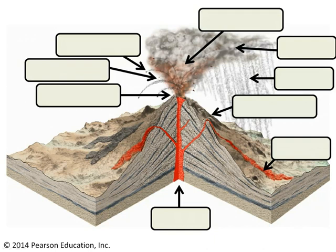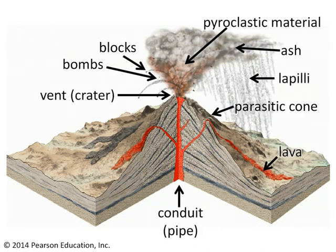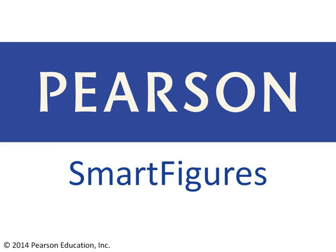Welcome back — let's see how you did. We've got a central conduit bringing magma towards the surface. Once that magma gets to the surface, it can erupt as lava or as pyroclastic material. It leaves the volcano at a vent, which may be crater-shaped or may be a parasitic cone. If it is pyroclastic material that gets erupted, it could be ash, which is small; lapilli, which is medium-sized; or blocks or bombs, which are quite large. Thanks for your attention. This has been another smart figure.